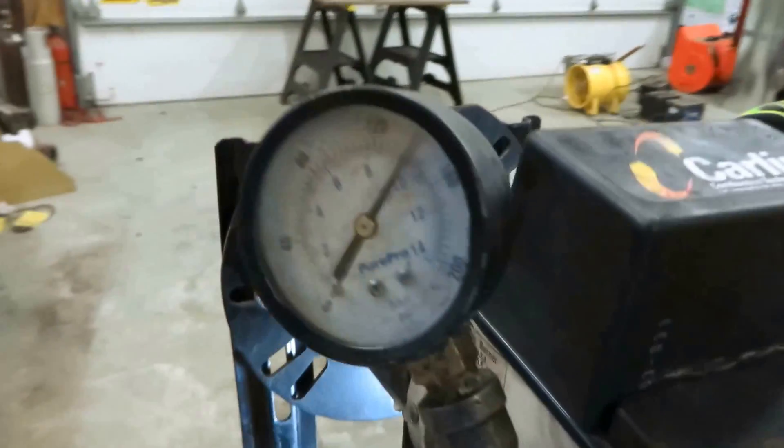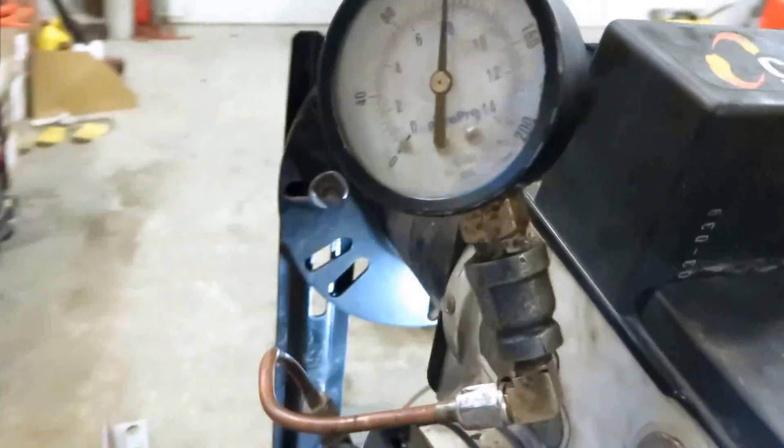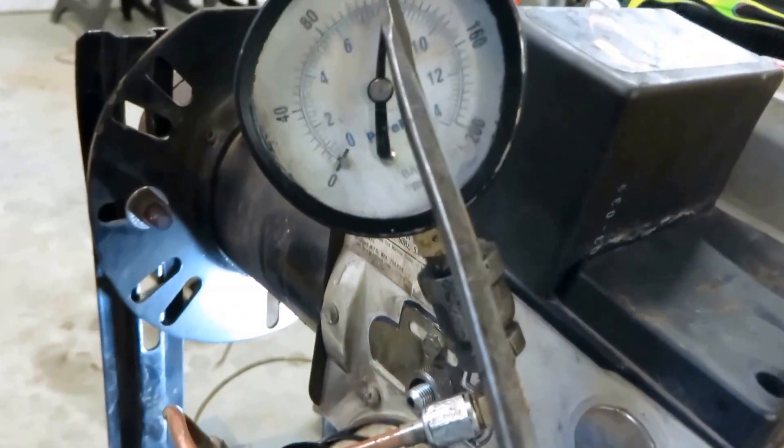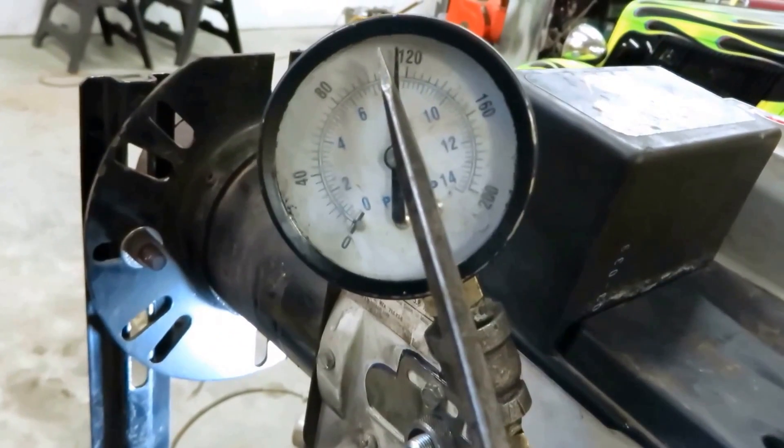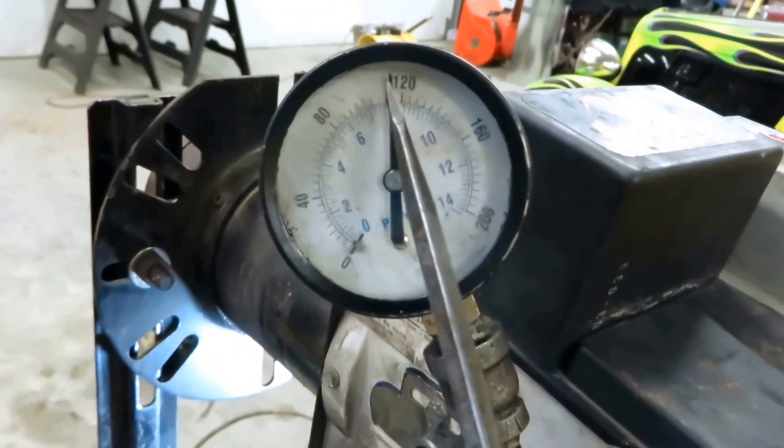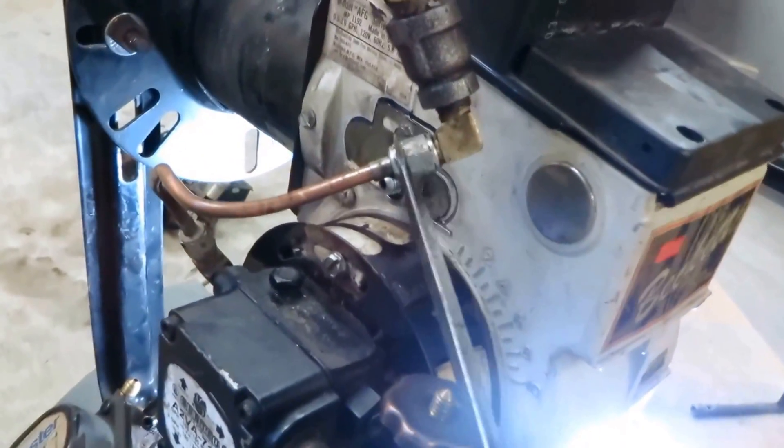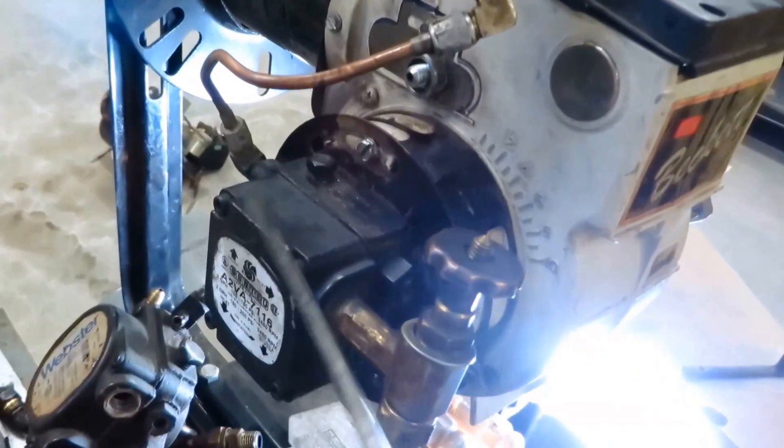What you want to do is, when you shut this off, that thing should drop down like 20 lbs and then hold. If that continues to drop and you got no leak here, you got a bad check valve inside the pump here.